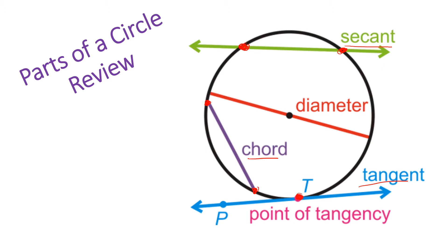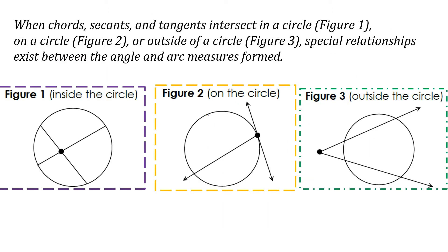Now let's get into some problems using the secant, chord, and tangent of circles. When chords, secants, and tangents intersect inside a circle, on a circle, or outside of a circle, they form special relationships between the angle and arc measures. I'm going to go over examples of each type of intersection and have you try some on your own.